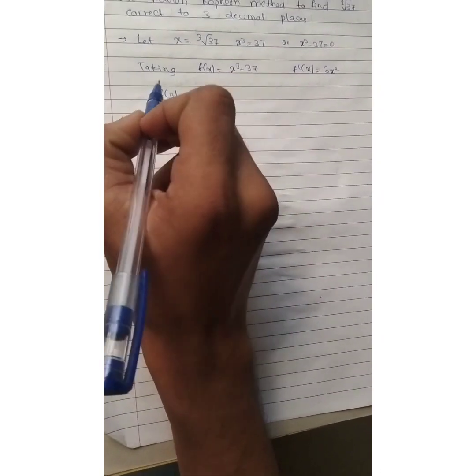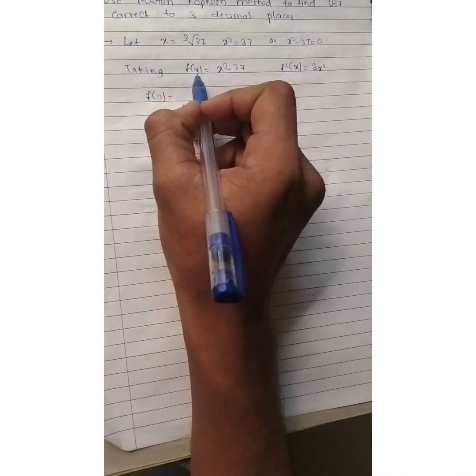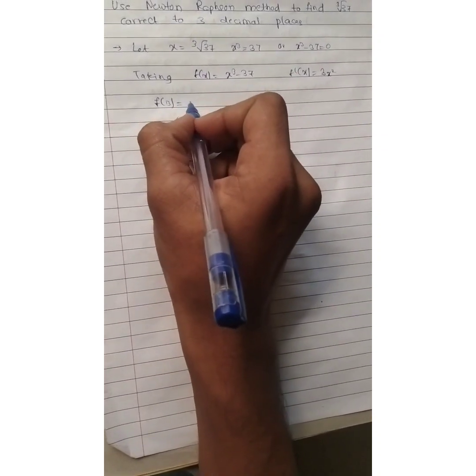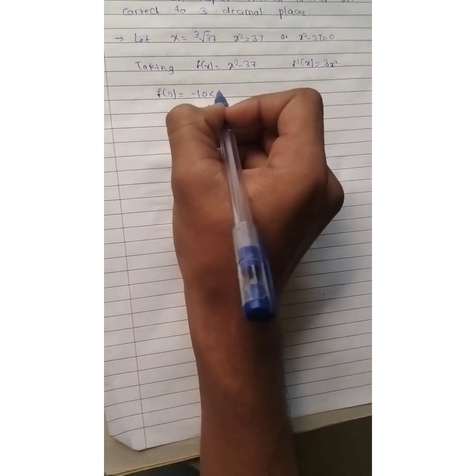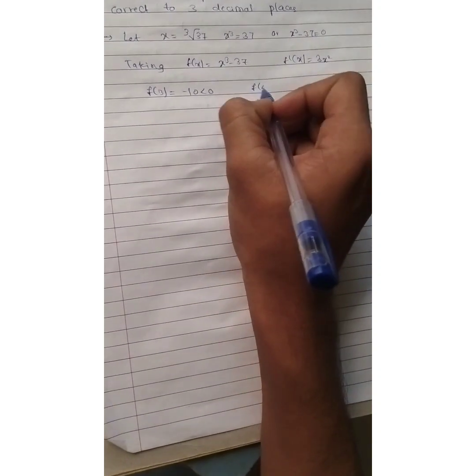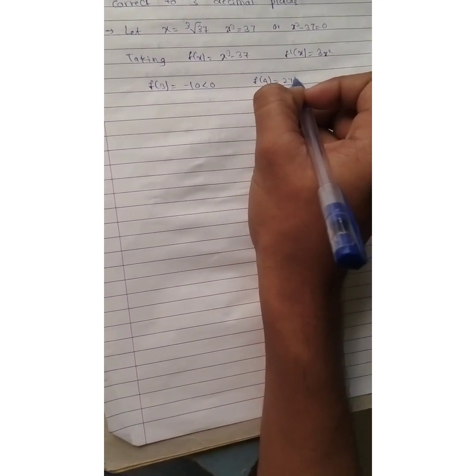f of 3 means when you substitute x is equal to 3 in this equation, f of 3 you will get minus 10, which is less than 0. Similarly, f of 4 is equal to 27, which is greater than 0.